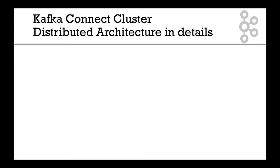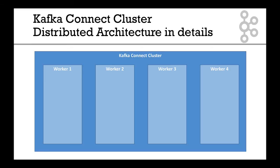Here's what it looks like for this distributed architecture with a lot of details. Here's your Kafka Connect cluster and we have multiple workers — we have four workers here. Each worker is a process and usually that process is an entire server. So here we have four workers, four servers, four processes.